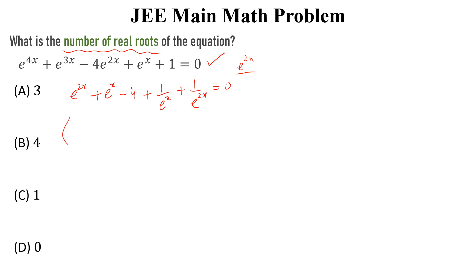Now, we can write this equation as e to the power 2x plus 1 over e to the power 2x plus e to the power x plus 1 over e to the power x minus 4 is equal to 0.